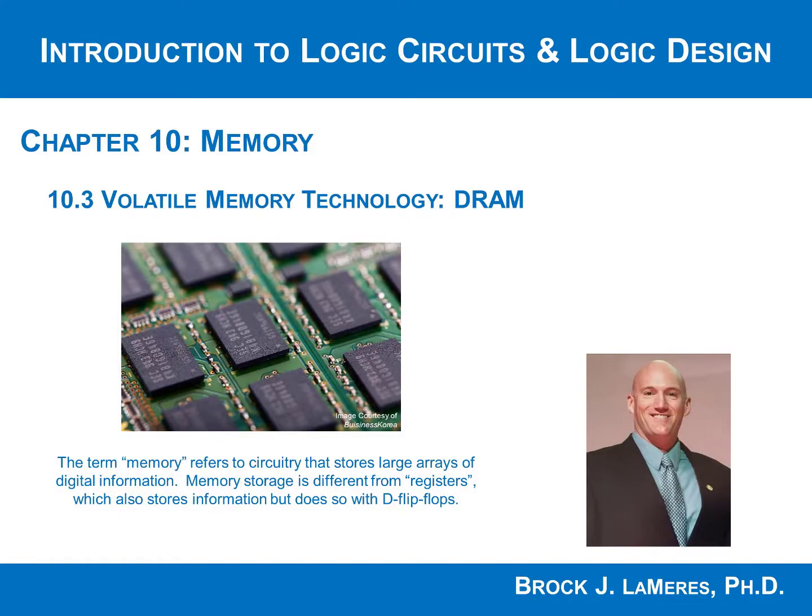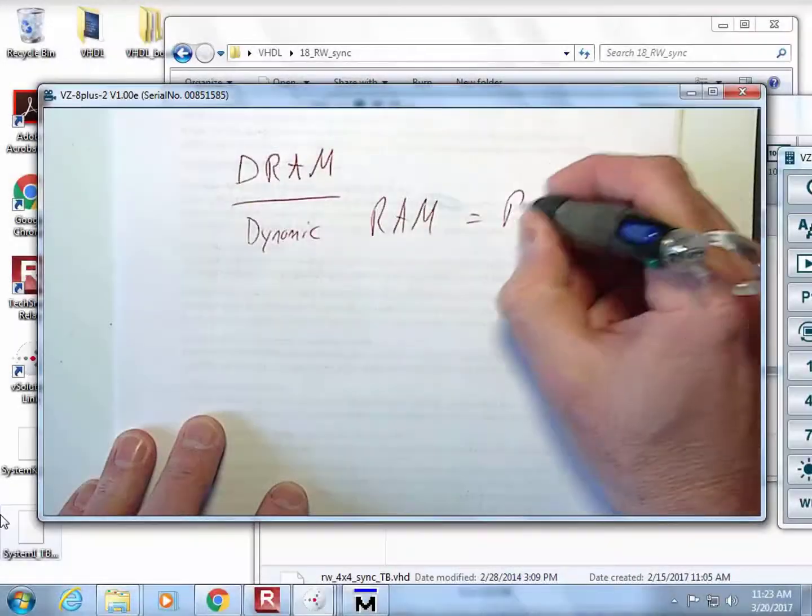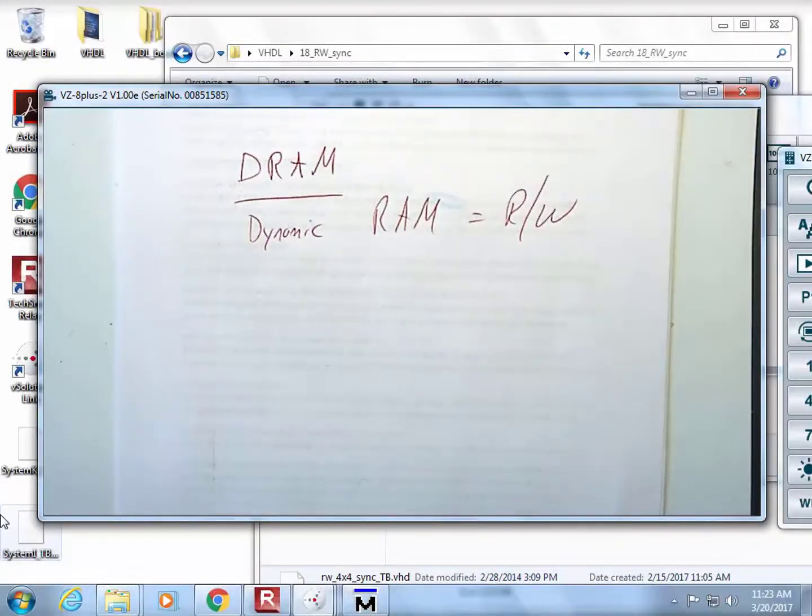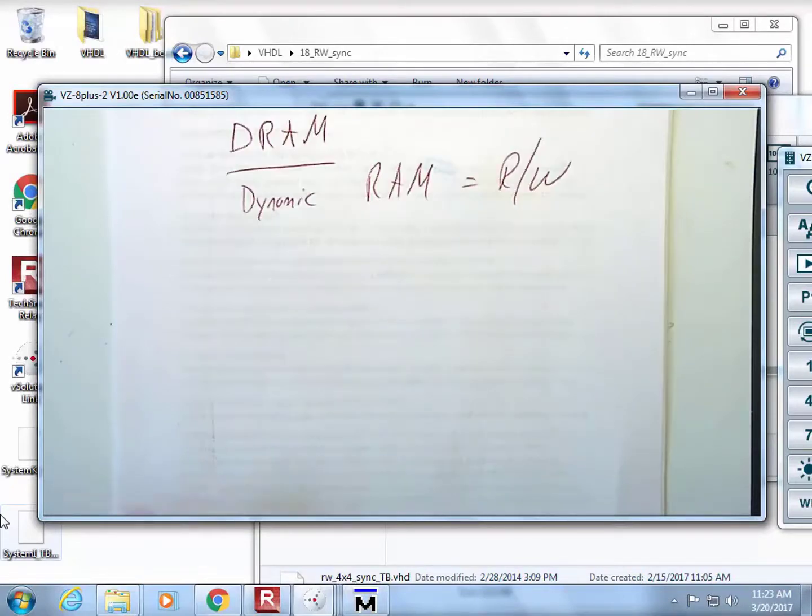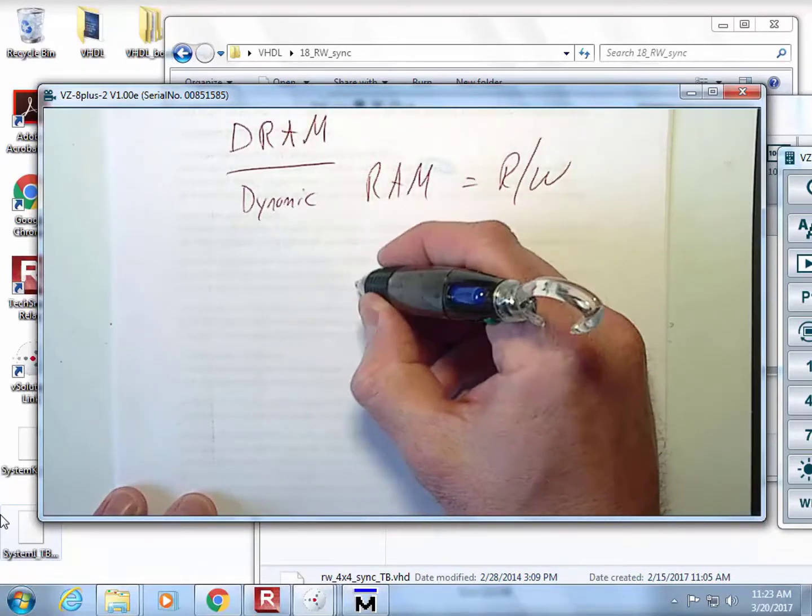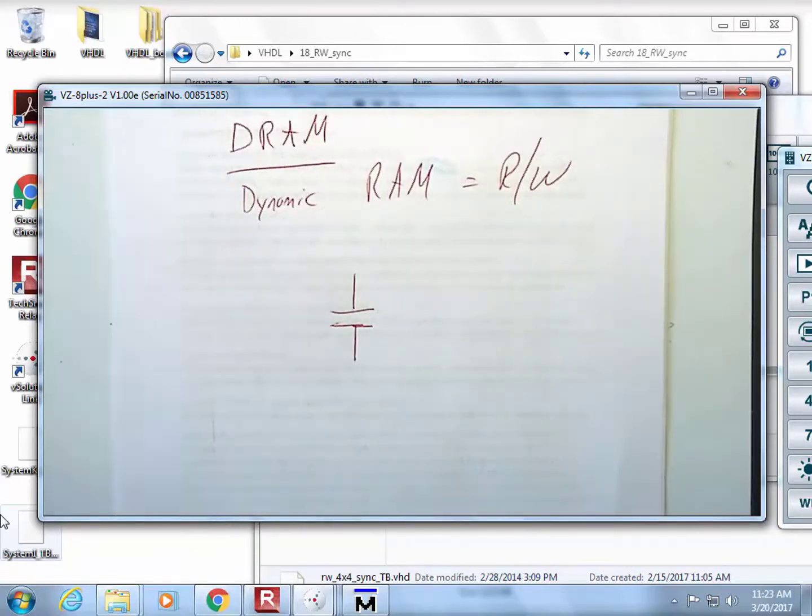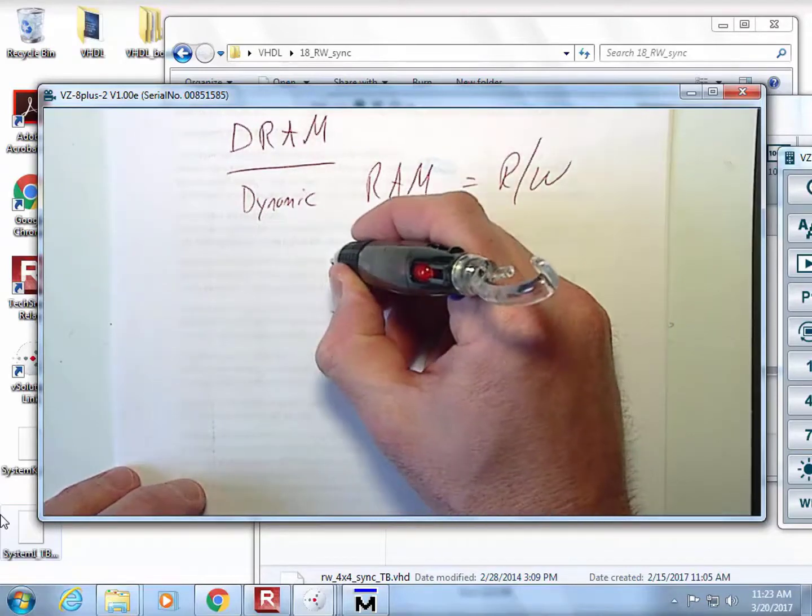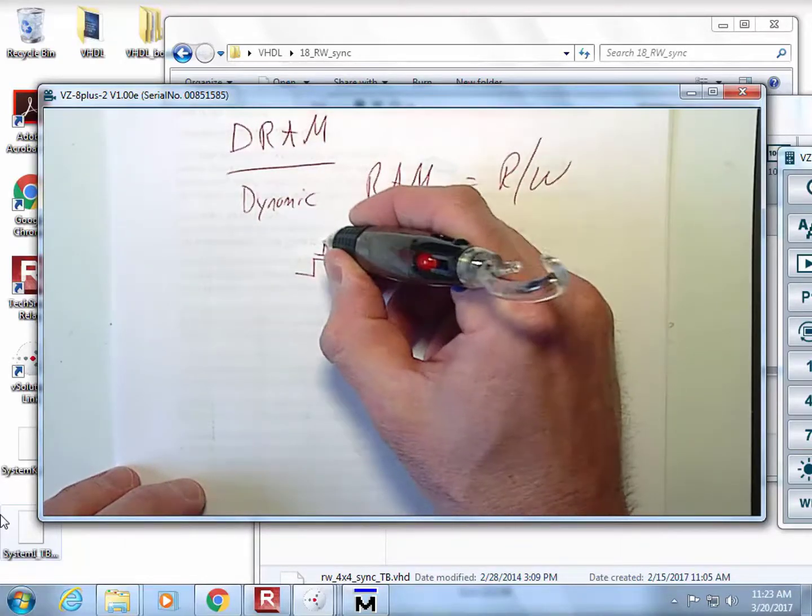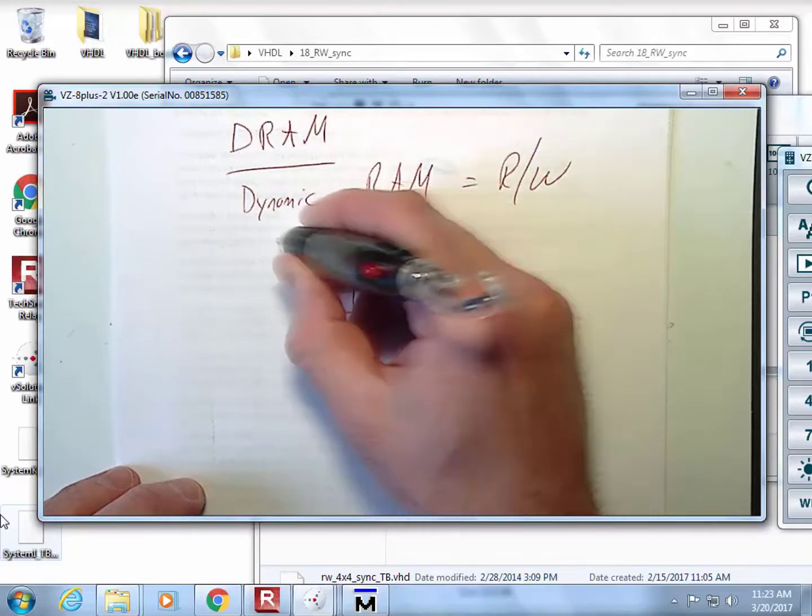DRAM stands for Dynamic Random Access Memory, and this is also a read-write memory. This is what we call the RAM in your computers. The reason that it's so dense is because you create it with a capacitor. So you store the information in a capacitor, and then you access the information with a single transistor. Then what you do is you come along here and you put like a transistor right here.